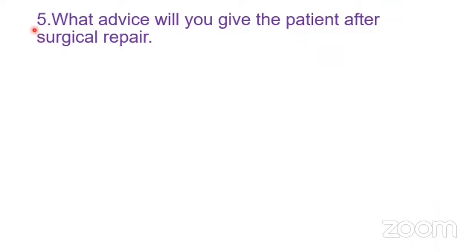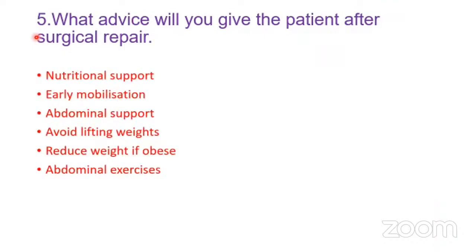Question five: what advice will you give the patient after surgical repair? Five key areas: nutritional support — ensure adequate, balanced nutrition to heal the wound; early mobilisation to prevent complications, especially deep vein thrombosis in obese patients; abdominal support, which can be bought commercially at pharmacies; avoid lifting heavy objects for at least six months after the operation; and reduce weight if obese, plus exercises to strengthen the abdominal muscles.